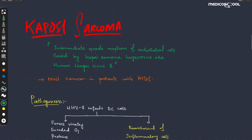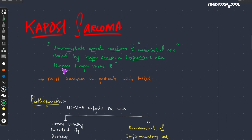Assalamu alaikum. Bismillah ar-Rahman ar-Rahim. Today we are going to study about Kaposi sarcoma. Kaposi sarcoma is an intermediate grade neoplasm of the endothelial cells, and it is mostly caused by the Kaposi sarcoma herpesvirus, also known as human herpesvirus 8.